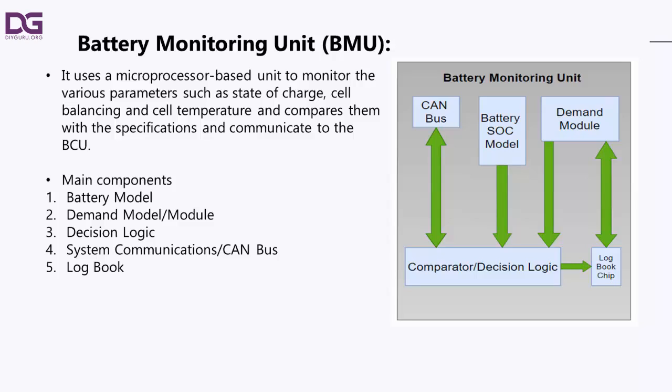The demand module also takes instructions from the communication bus, such as commands from the BMS to accept a regenerative braking charge, or from vehicle sensors such as safety devices, or directly from the vehicle operator. This unit is also used to set and monitor the vehicle operating mode parameters. This module is sometimes called the personality module.